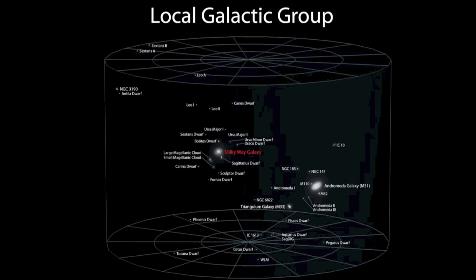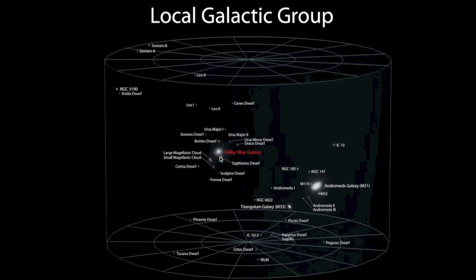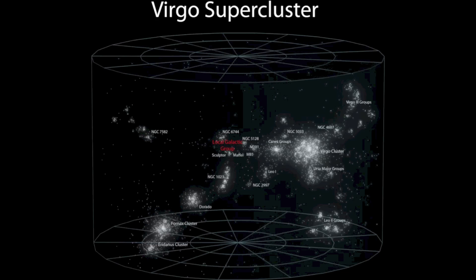This image shows the local group of galaxies that includes the Milky Way and its small satellite galaxies. The Andromeda galaxy is the nearest big galaxy to us at two and a half million light years — about 25 times the size of the Milky Way itself. Andromeda also has several satellite galaxies, making up what we call the local group, which is itself part of the Virgo supercluster.